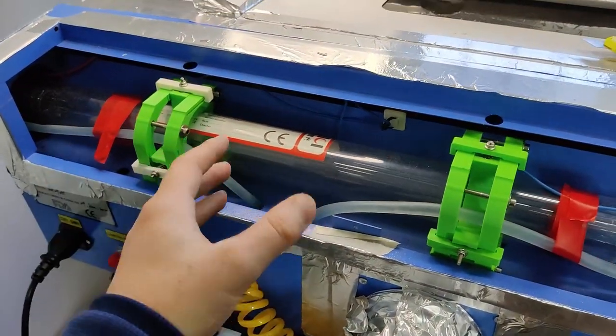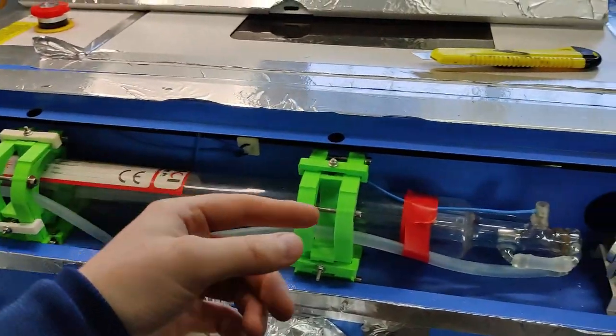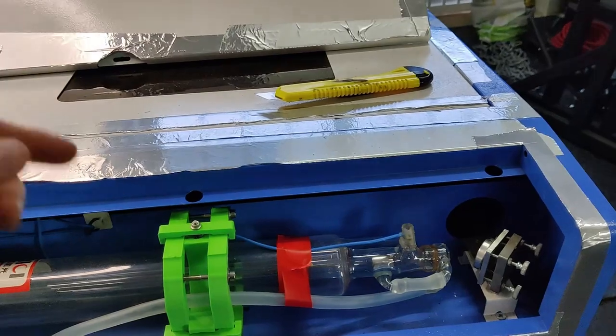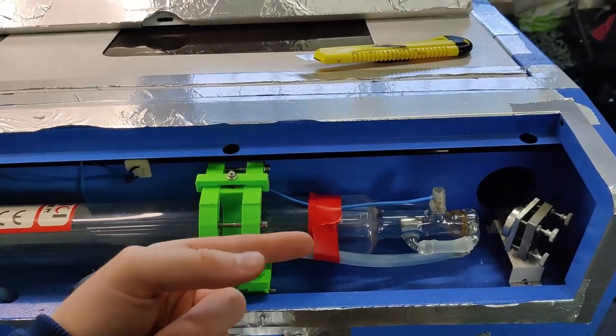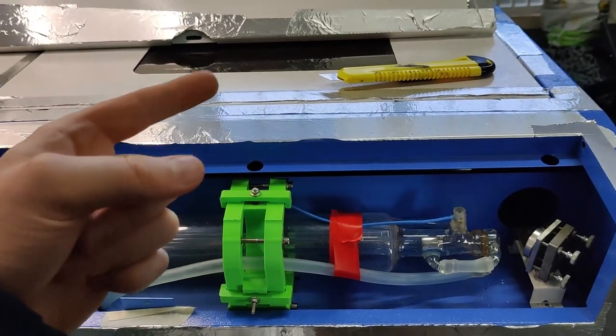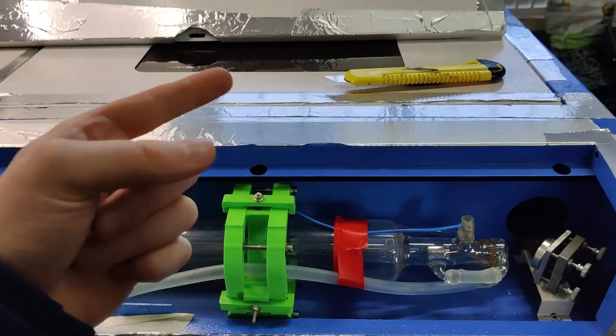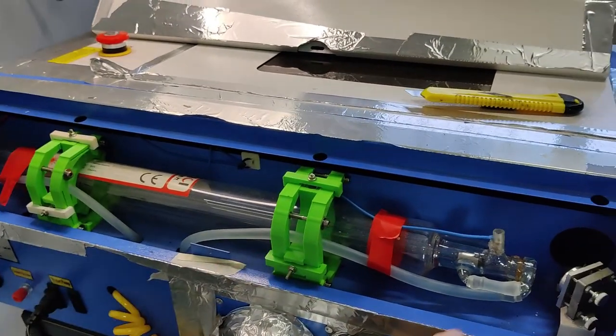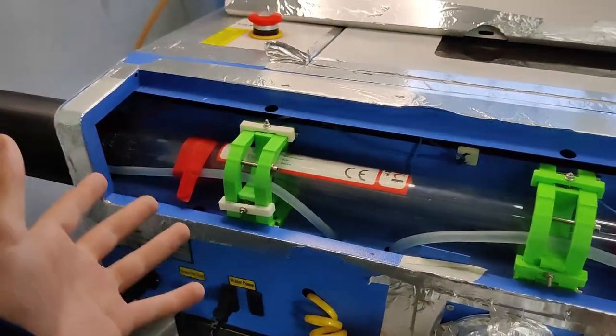You can see here I've made some 3D printed brackets that allow adjustment of the tube up and down, front to back, and basically when you align all the lasers this is your final adjustment point here which raises and lowers the point that the laser hits the last mirror. That's been really handy.